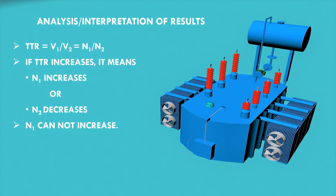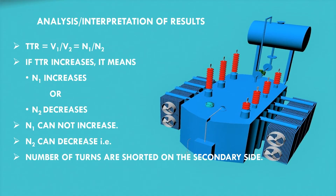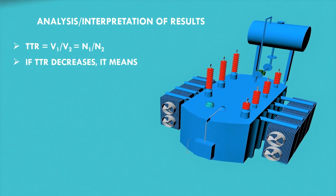N2 can decrease if there is a short circuit between the turns on the secondary side of the transformer. So if TTR increases, it means there is a short circuit and insulation failure between the turns on the LV side of the transformer.